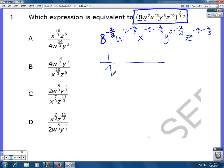Then when I multiply my exponents for w, I'm going to end up with w to the negative 14 over 3, and then x to the 10 over 3, y to the negative 2, and z to the 6.